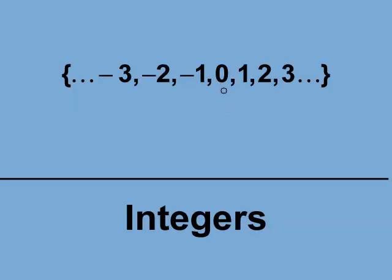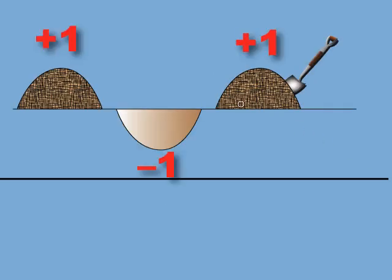Integers include the whole numbers zero and positive numbers 1, 2, 3, etc., but also includes a different class of numbers: negative numbers. Now we can go back to the mounds and holes and properly count them with integers. Each mound is a positive 1, and the hole is a negative 1.